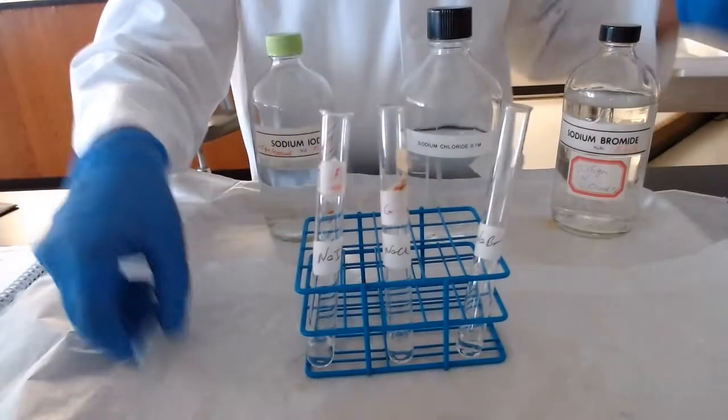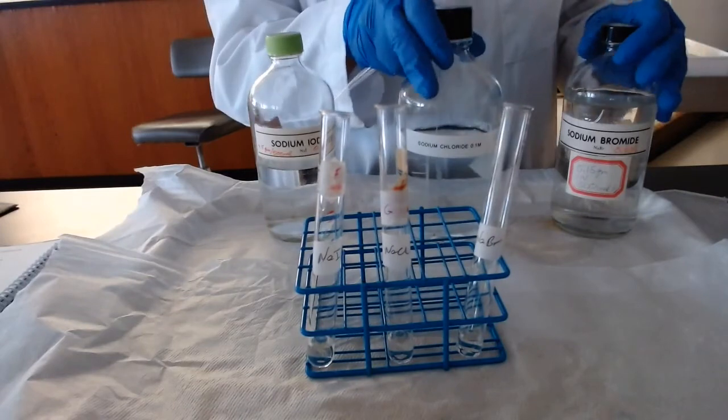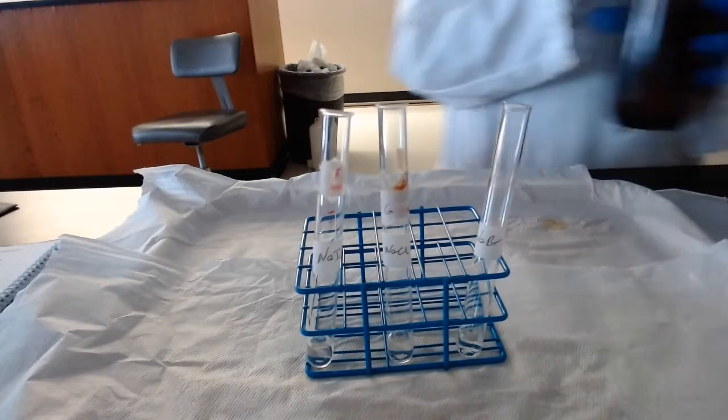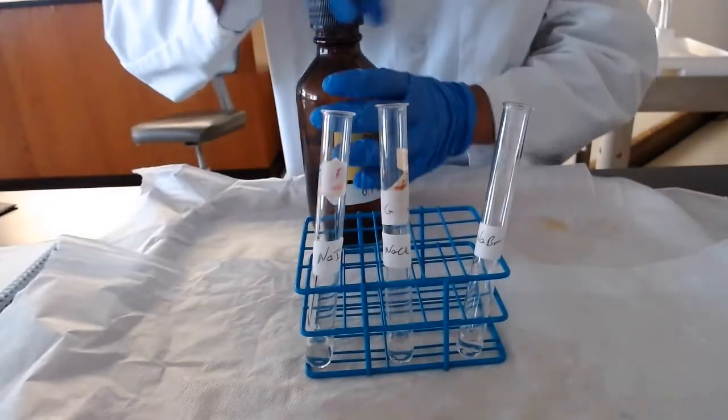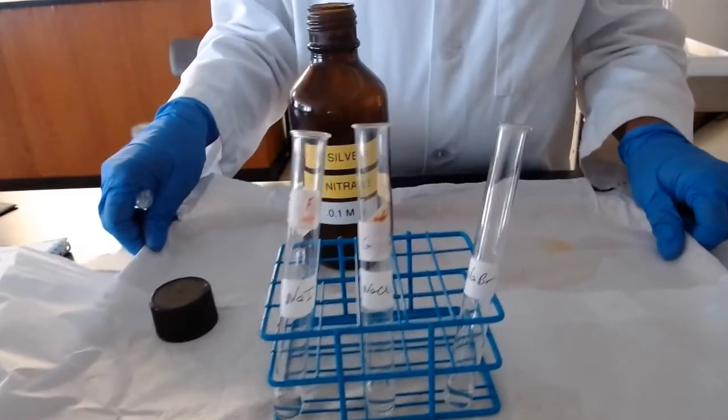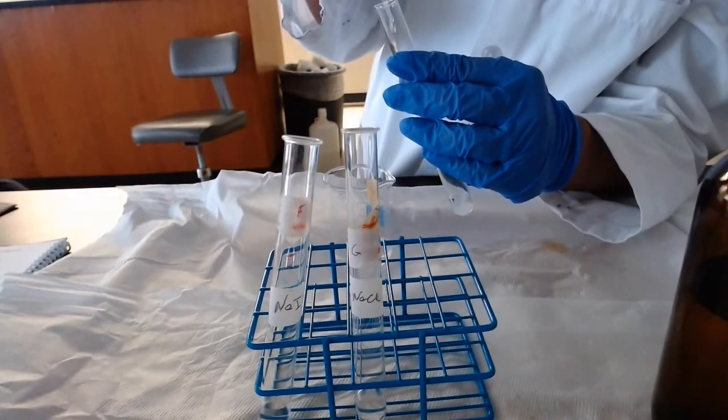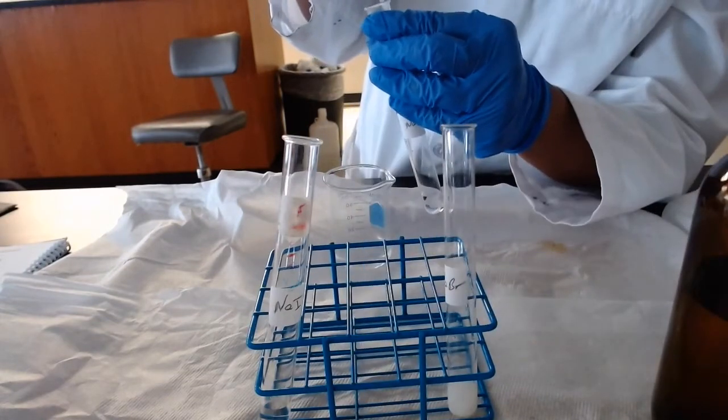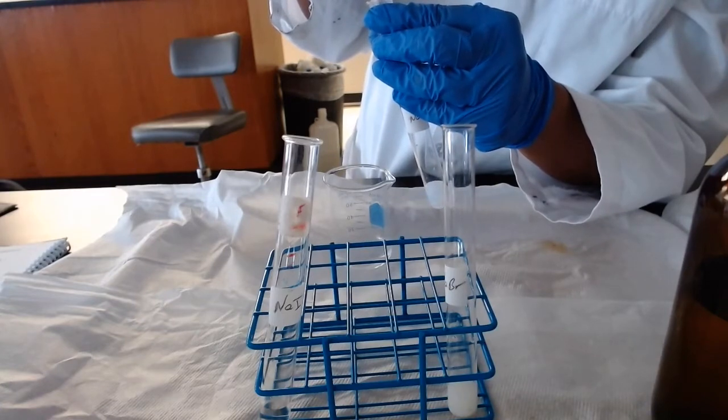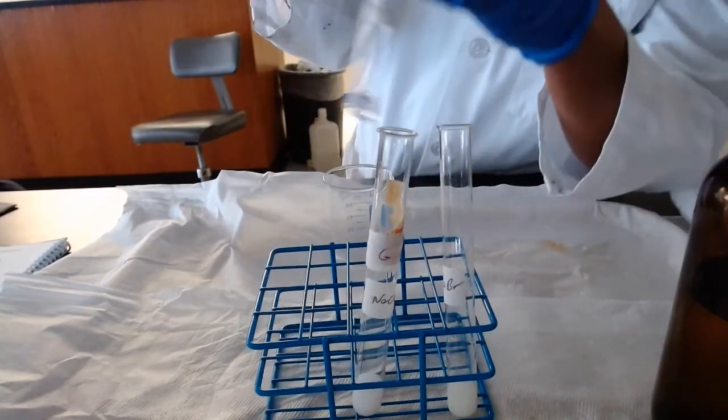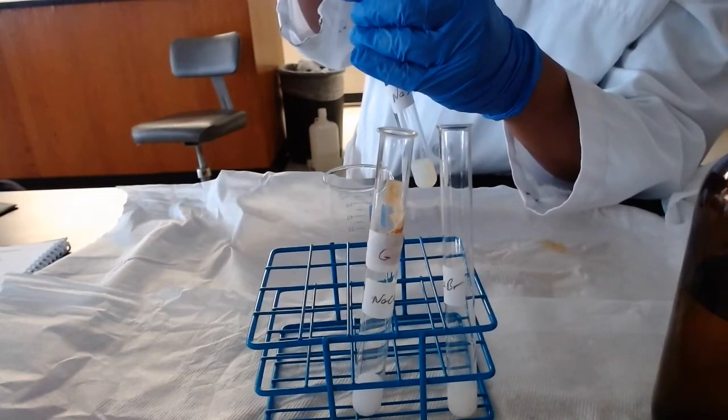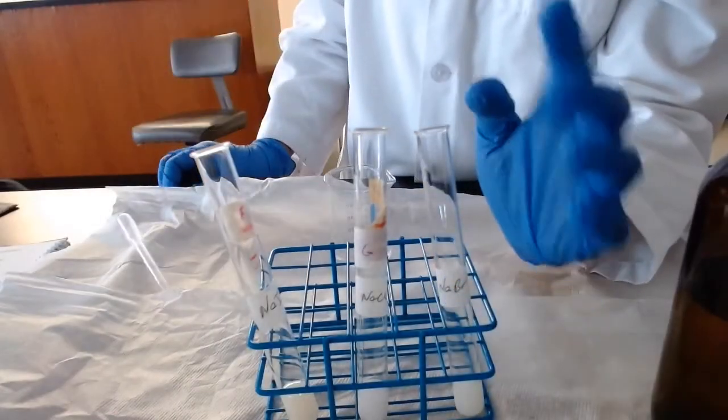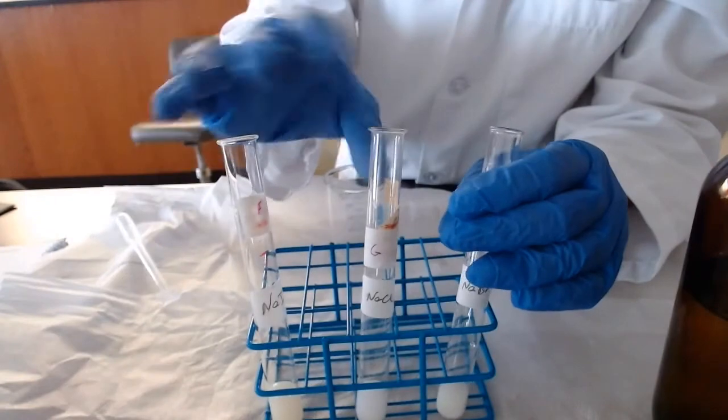To these, I will add 0.5 milliliters of silver nitrate. At that point, the mixture will become light-sensitive. So I will add 0.5 into here. You can see immediately, we have a precipitate forming. The precipitate obviously is silver iodide, silver bromide, and silver chloride.